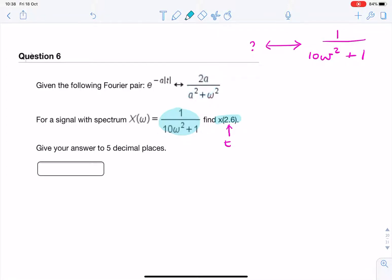There's two important differences. One is this 10 here that needs to look like that. It needs to be a 1. And this 1 needs to look like that, a 2a. So we need to address those two problems.